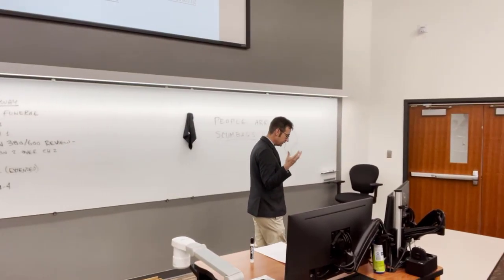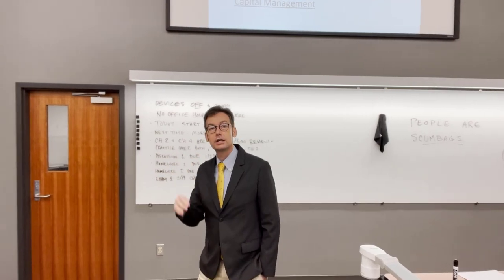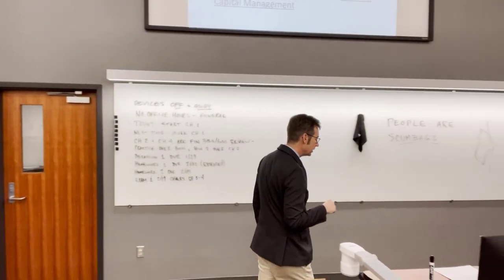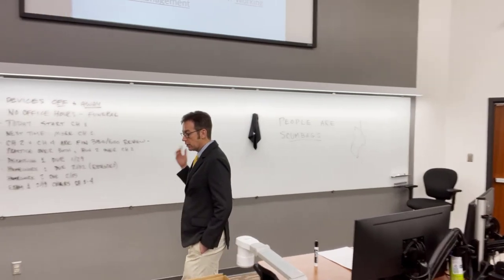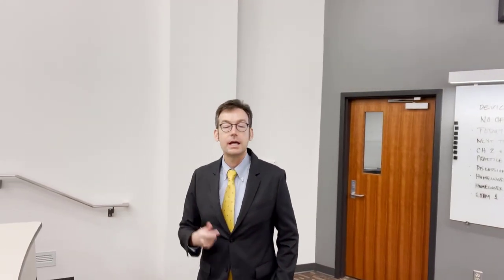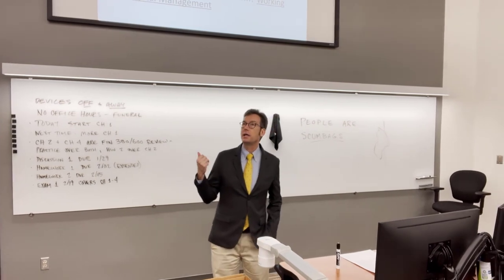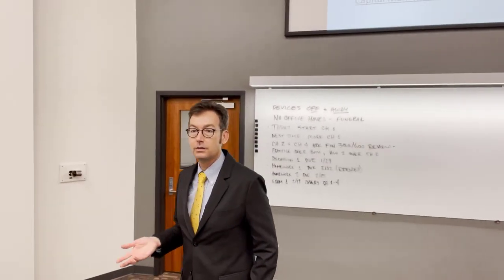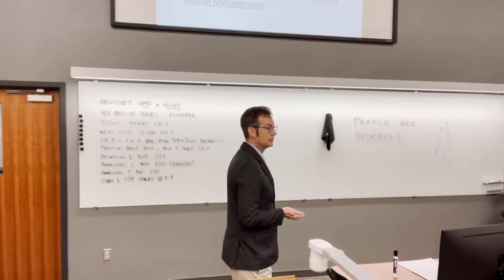You need to remember the three questions and be able to identify which category different situations fall into. The names all have the word 'capital' in them: capital budgeting, capital structure, and working capital management. Examples: using debt or equity to finance a new factory — capital structure. Build a new factory or expand a current one — capital budgeting. How much to keep in the checking account, or how quickly to pay suppliers — working capital management.